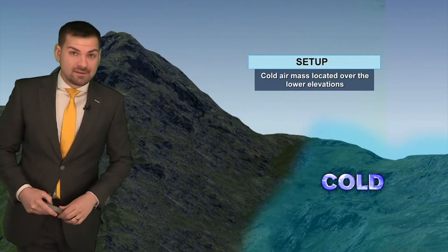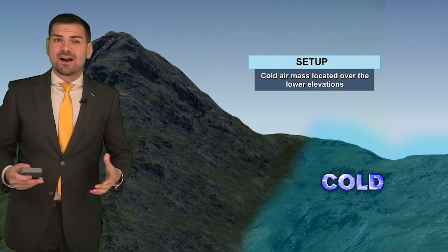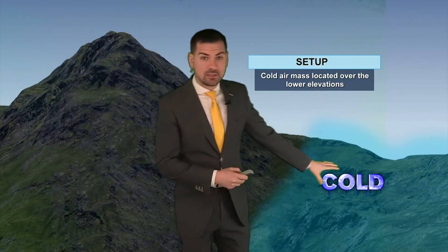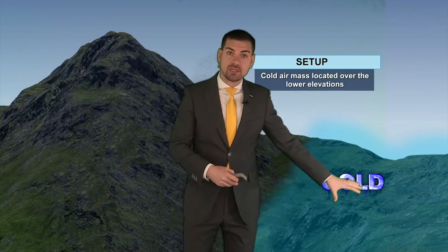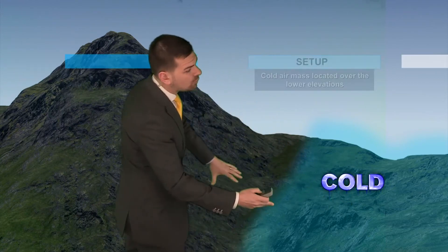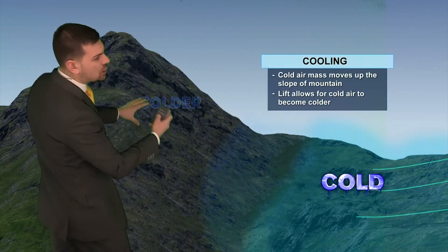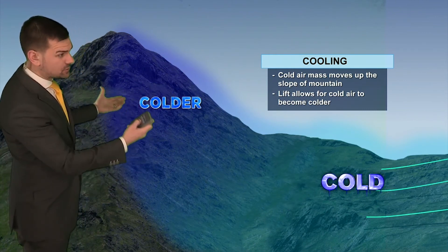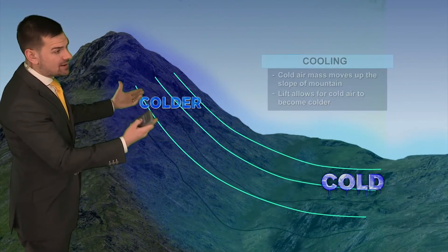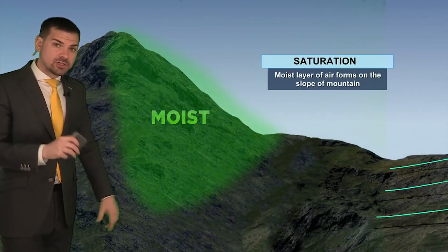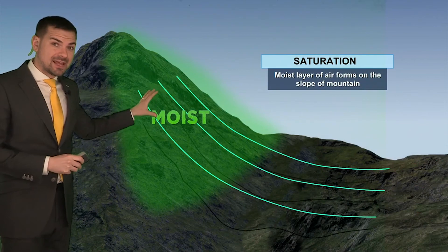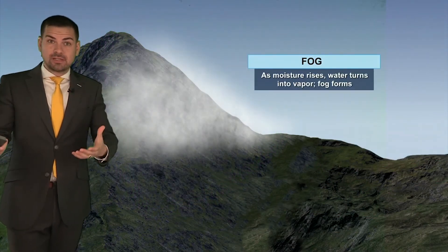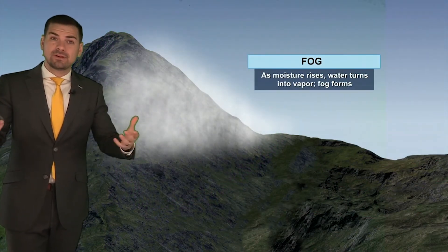Chances are, if you live in a more mountainous area, you see fog all the time. This happens when cold air in the lower elevations and the valleys begins to ride up the slope of the mountain. As this happens, that air turns colder, and eventually you get a thin layer of moisture to develop on that slope that rises up, and that will turn into water vapor and fog.